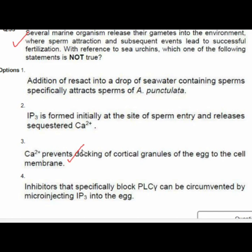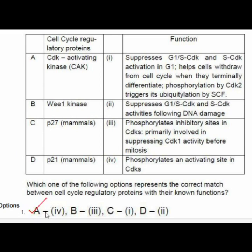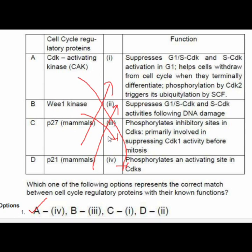Question 54 lists cell cycle regulatory proteins and their known functions as a match-the-following. The correct matching: A matches with CDK1 kinase which phosphorylates the inhibitory site; C matches with suppresses G1/S CDK and S-CDK; P2 matches with suppresses G1/S CDK and S-CDK activities following DNA damage.